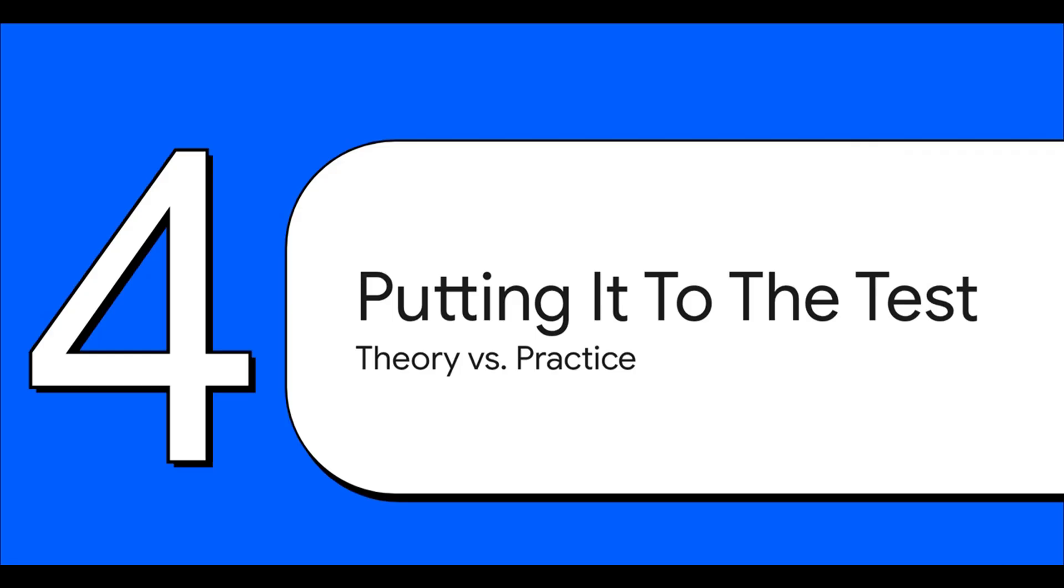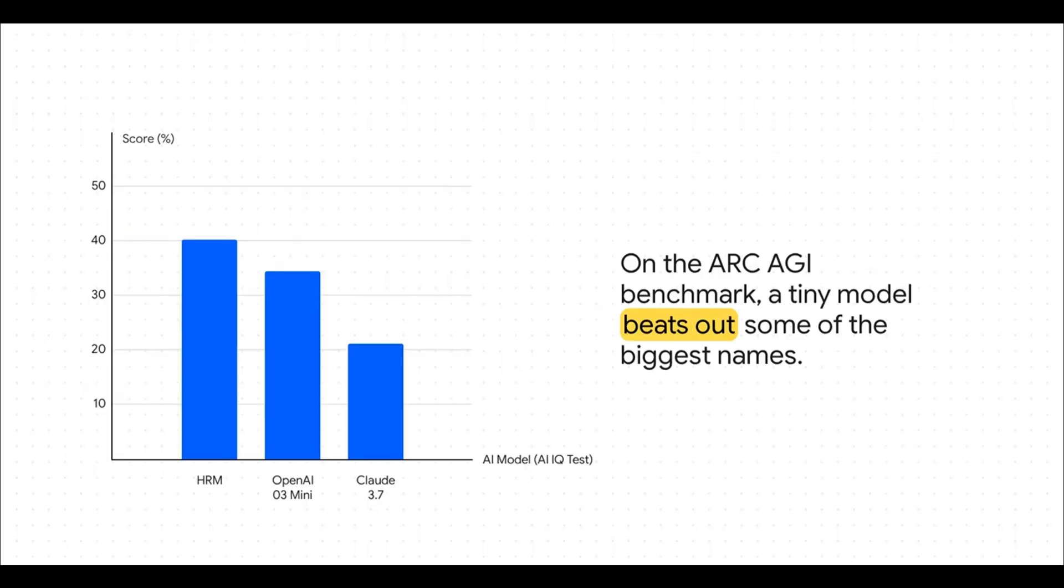Okay, so the theory sounds incredible. A self-correcting AI that thinks in loops. Awesome. But does this fancy new architecture actually work in the real world? Let's check the data. So, on the Arc AGI benchmark, which is basically an IQ test for AIs, HRM scored a really impressive 40.3%. Now, that's way higher than OpenAI's model at 34.5%, and it more than doubles the score of Claude 3.7. And just remember, we're talking about a tiny model absolutely schooling some of the biggest names in the industry.